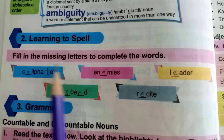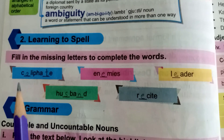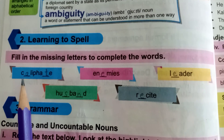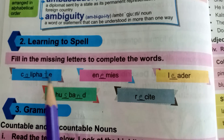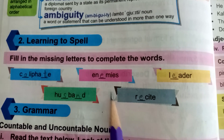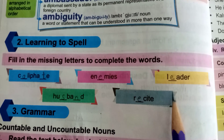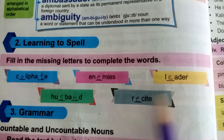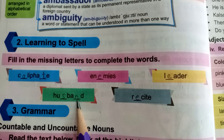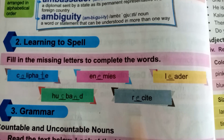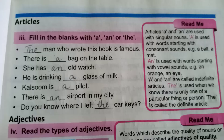Next: fill in the missing letters to complete the words. Khilafat — A and T will come. Next: enemies — E will come. Leader — E. Husband — S and N. And last: recite — E will come.